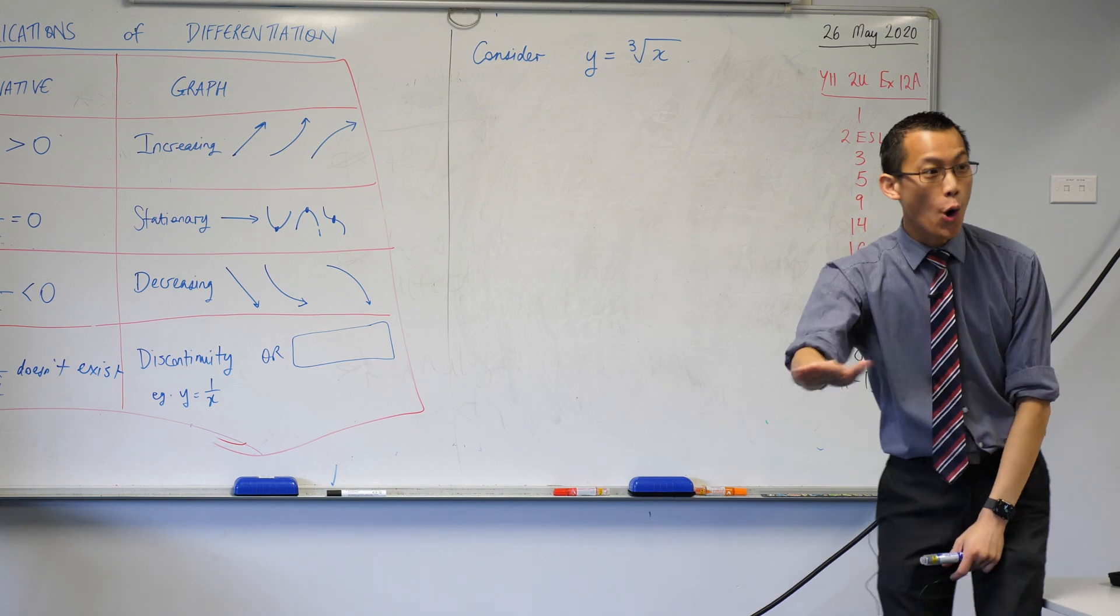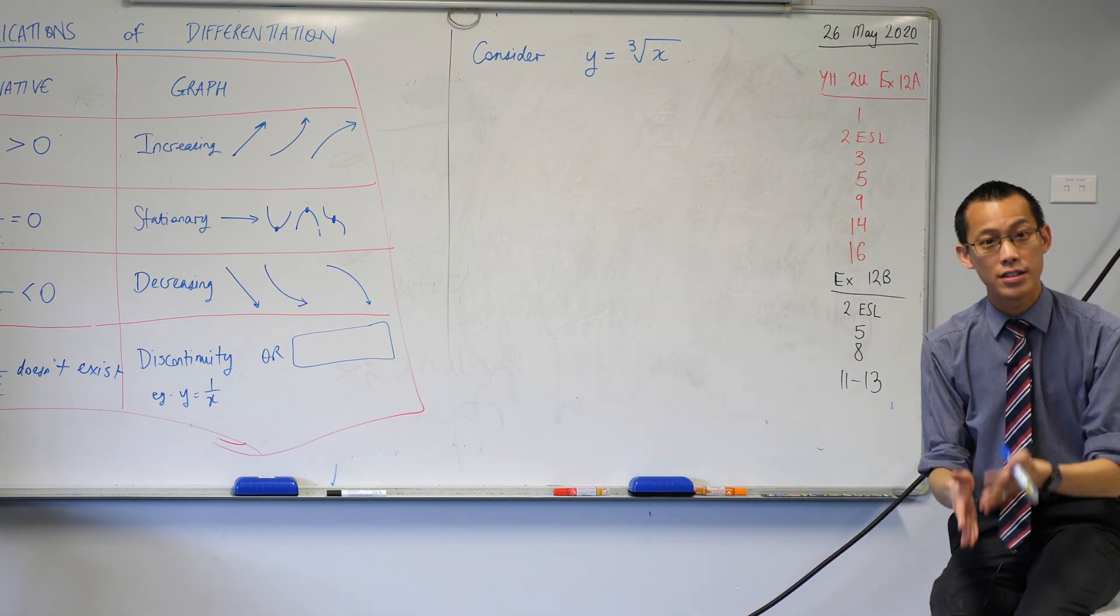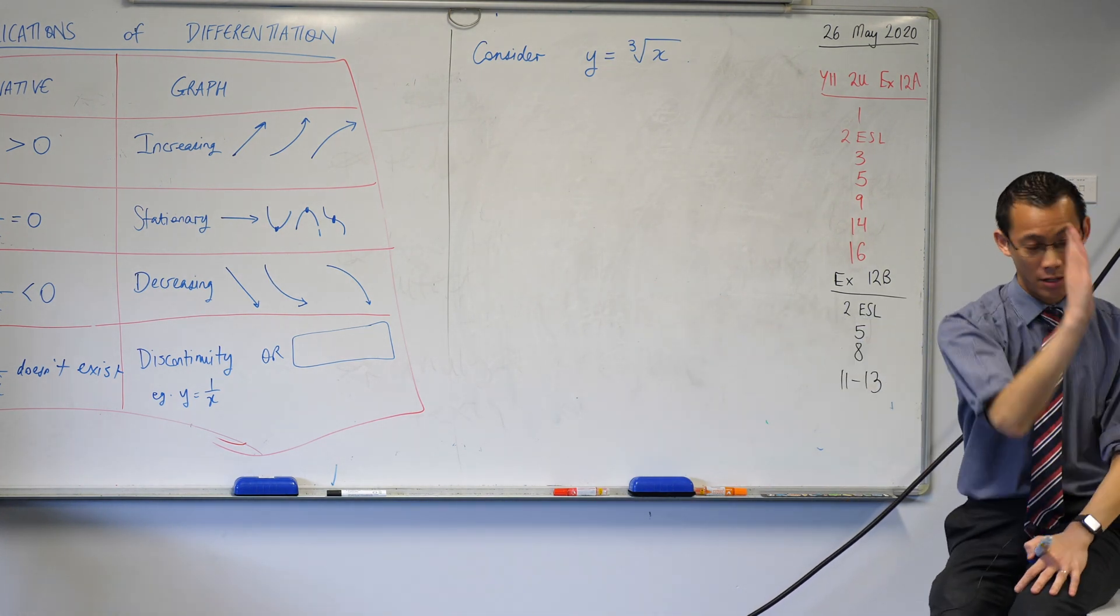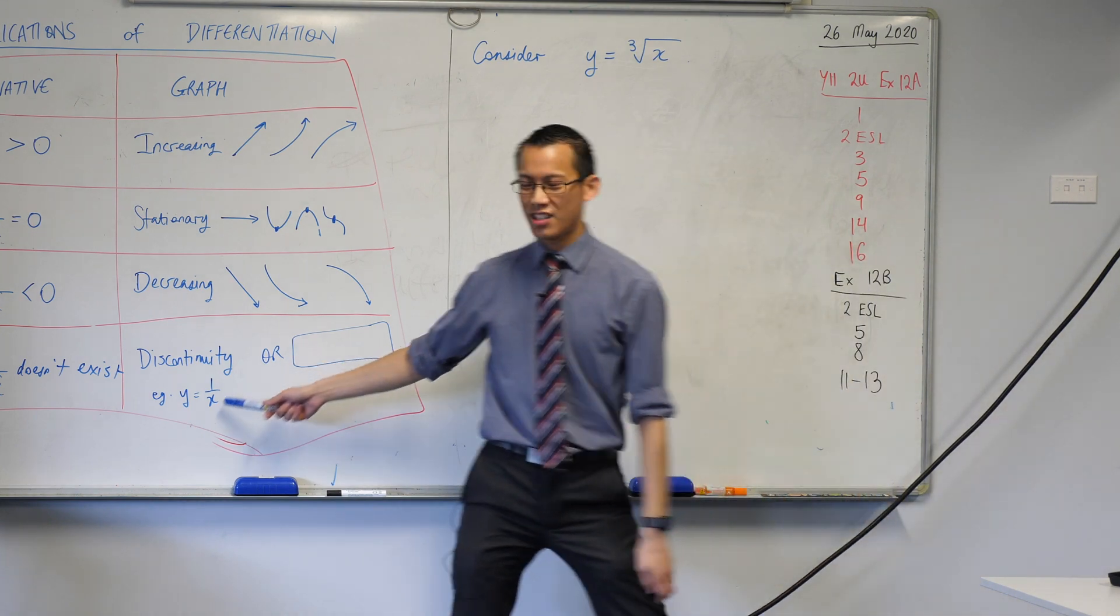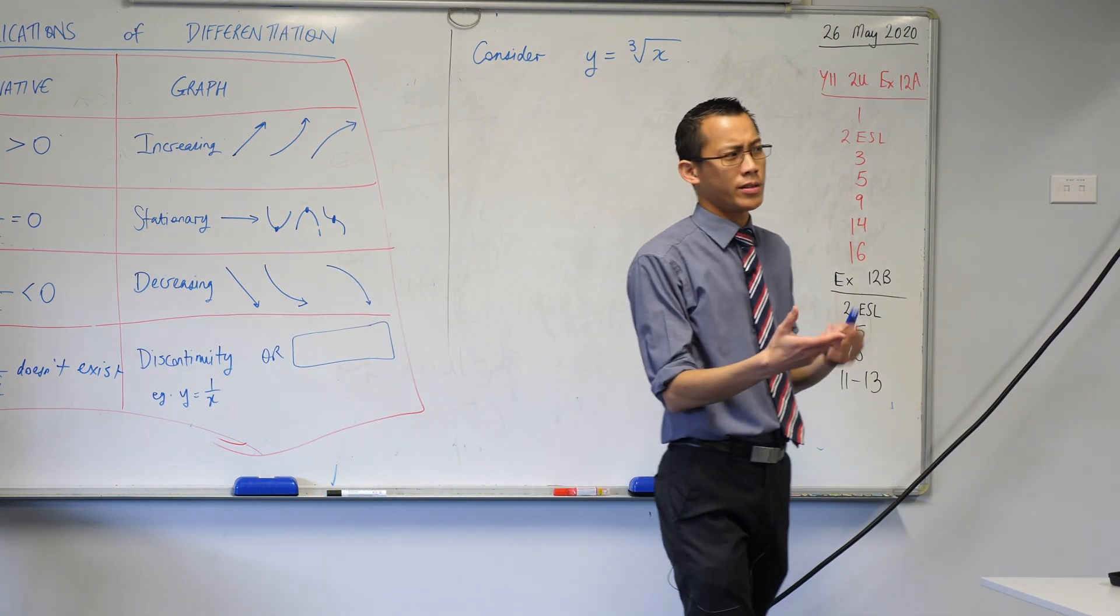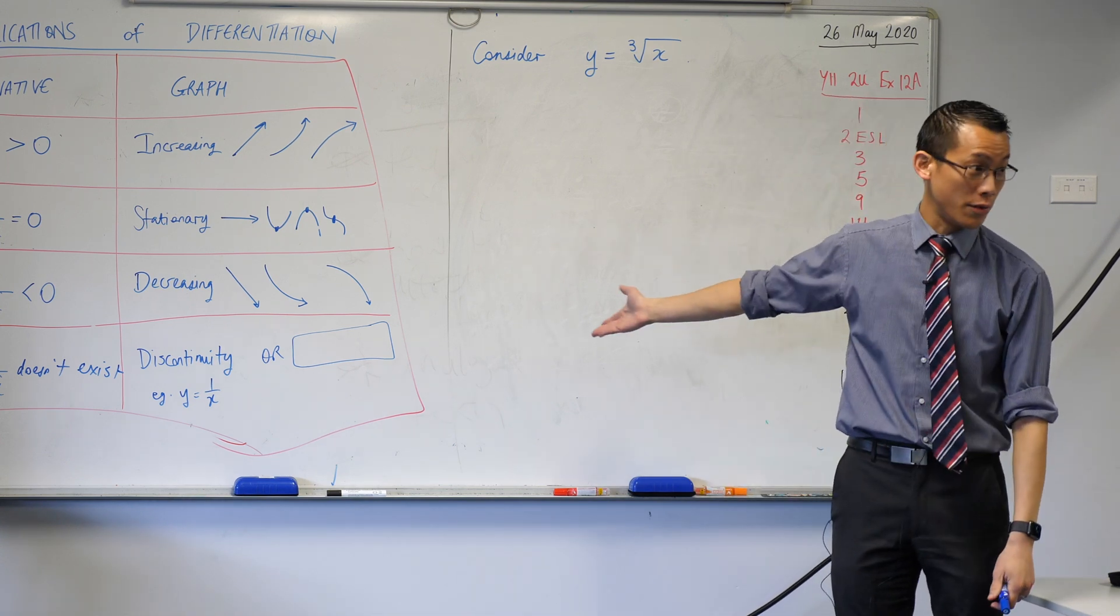Sometimes there just is no derivative. And the example I gave you was, if the function doesn't exist, y equals 1 over x is a good example. We know it's got a vertical asymptote. If the function doesn't exist, its derivative won't exist either because it doesn't make sense to say what is the gradient of my non-existent graph. Graph doesn't exist, derivative doesn't exist either.